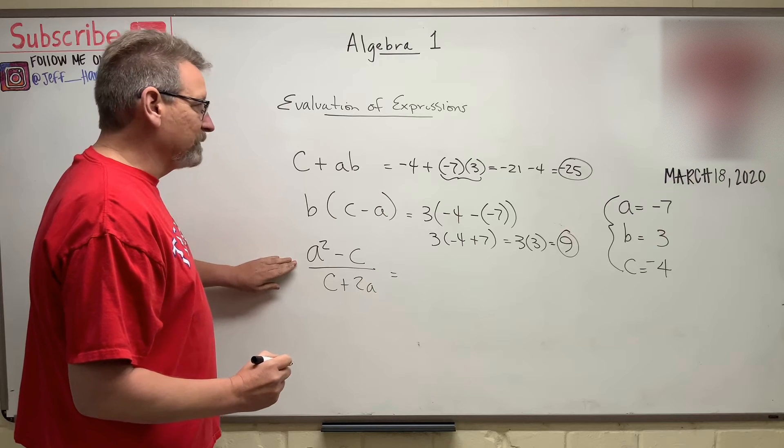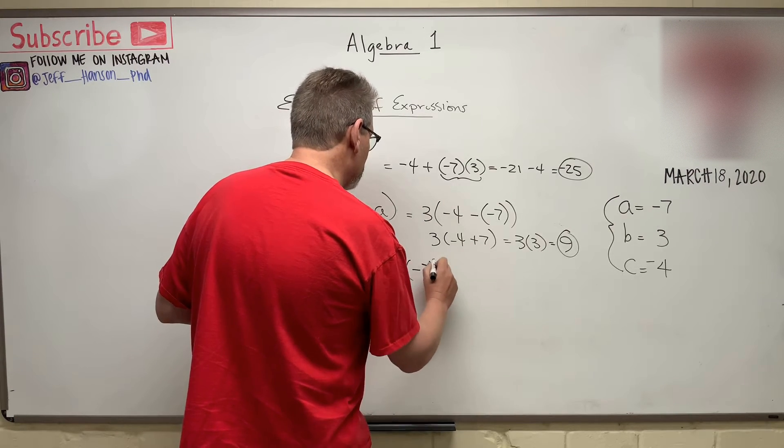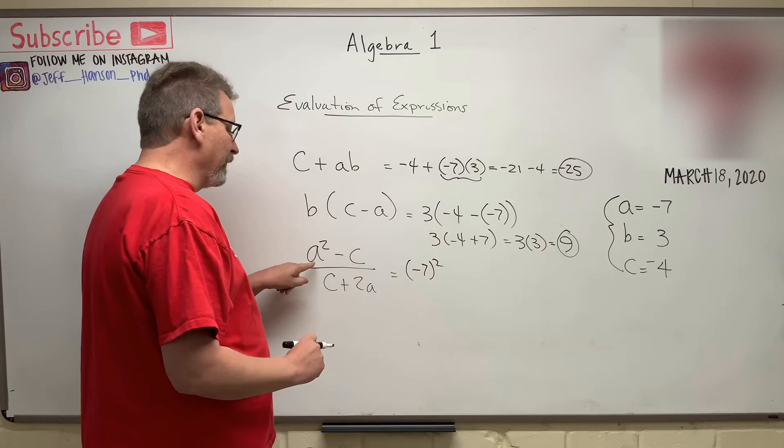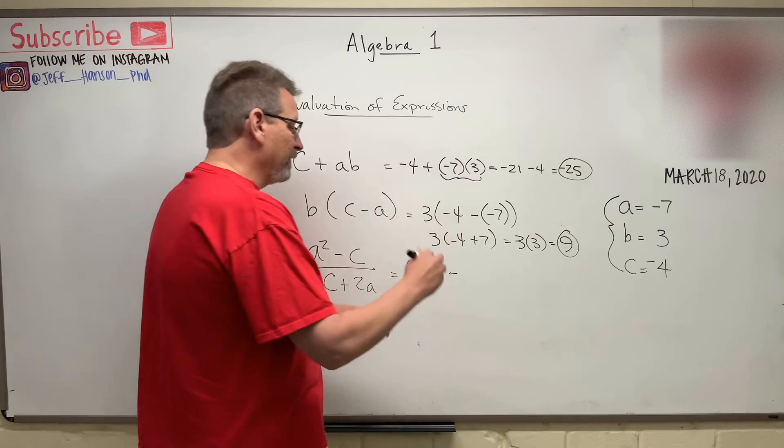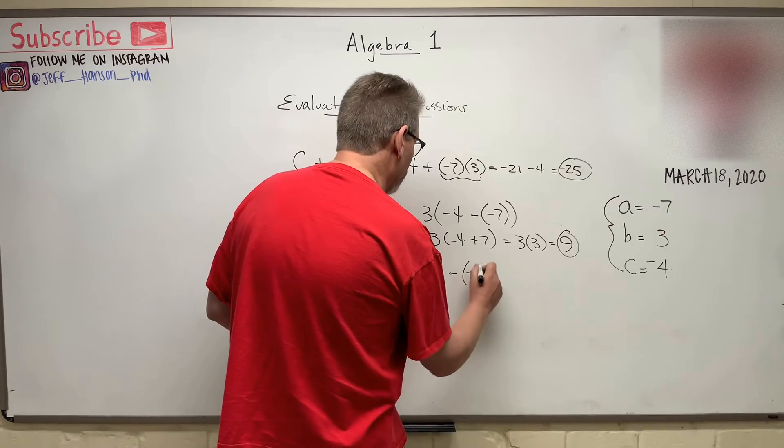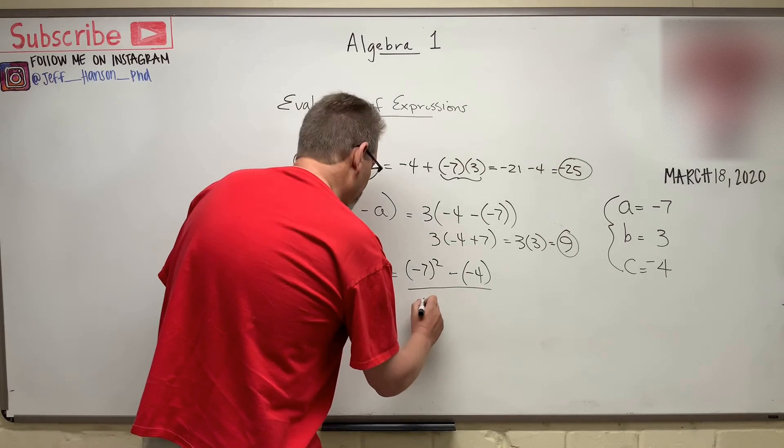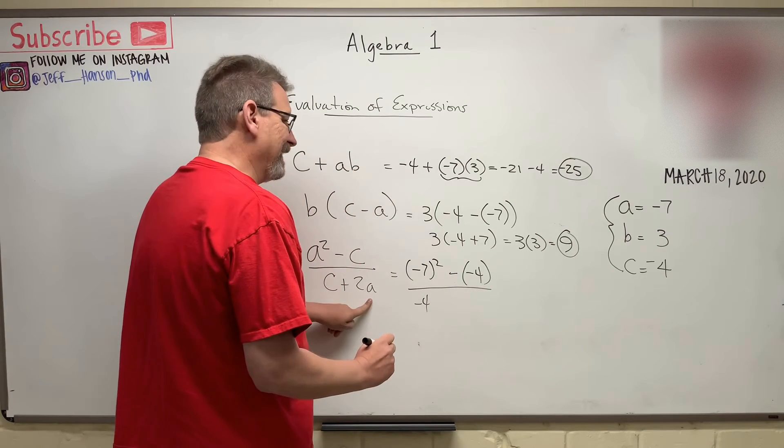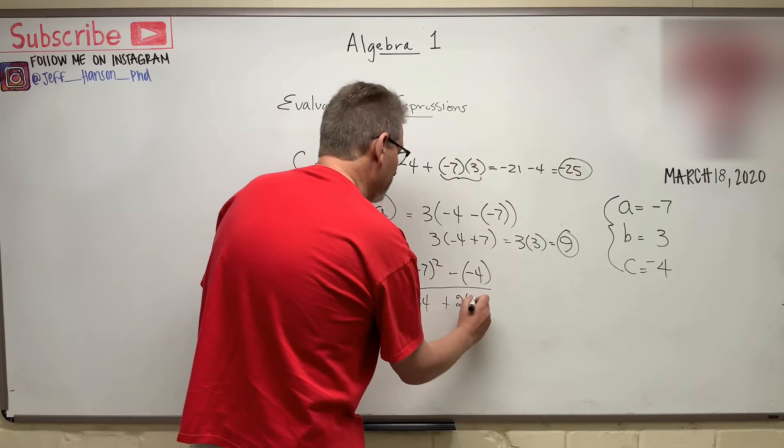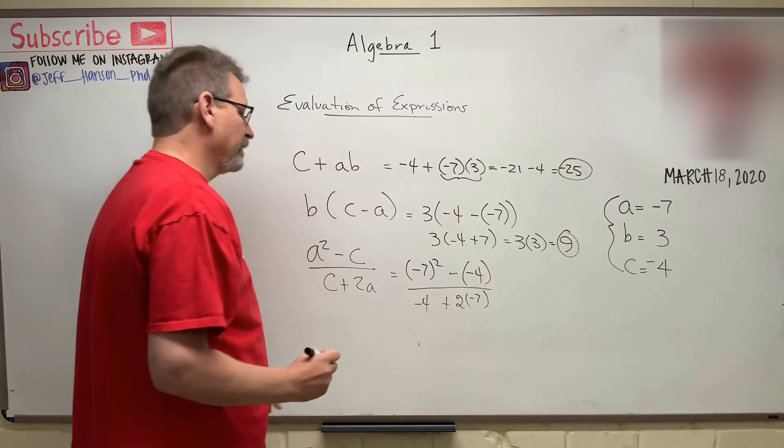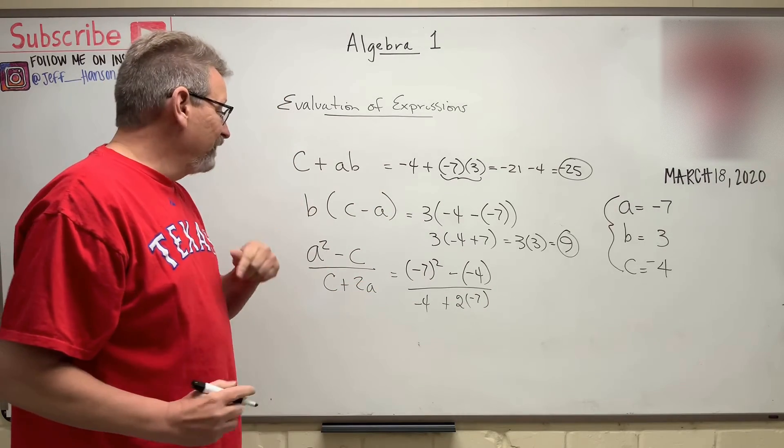Okay. And then finally, the last one, let's substitute in here. Okay. We have minus seven squared, and look at the parentheses there. That's important. Okay. Minus, what's C? Minus four, minus four divided by C plus two A, plus two times A is minus seven. Okay. Can we do that? I don't know. It kind of looks hard. Well, one step at a time. Okay. Let's do the parentheses first.